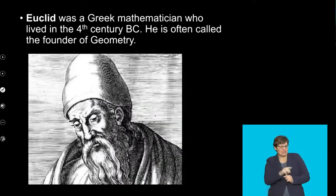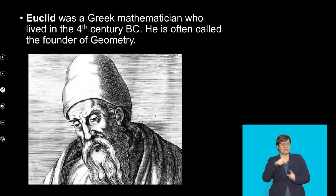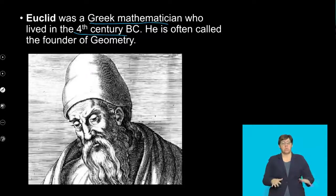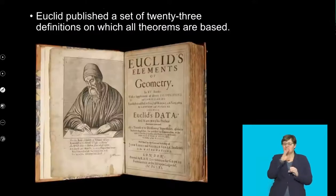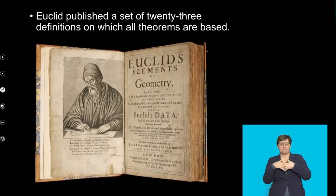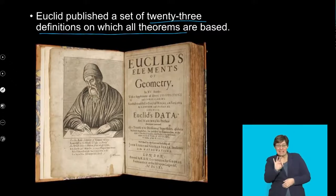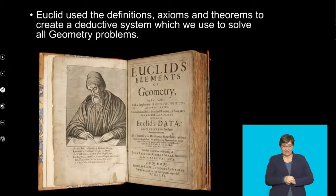Let's talk about the origin of this Euclidean geometry. There was a very intelligent gentleman called Euclid, who was a Greek mathematician who lived in the fourth century before Christ. He's often called the founder of geometry. Euclid published a set of 23 definitions on which all of our theorems are based, and that's where we're drawing all of this information we're going to try and talk about now.